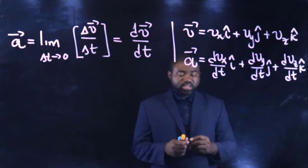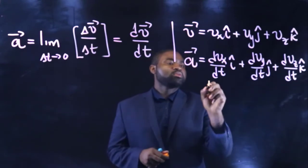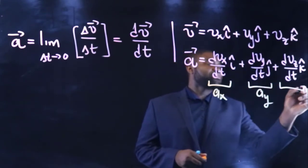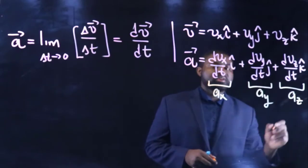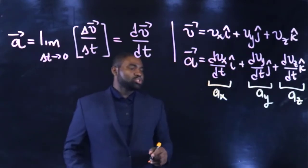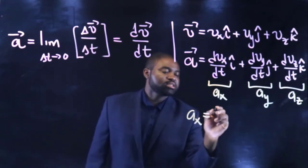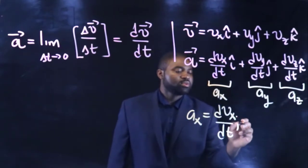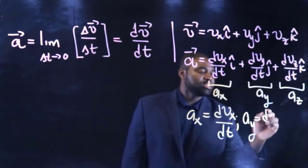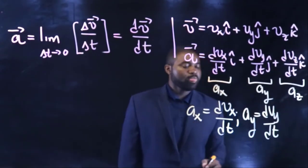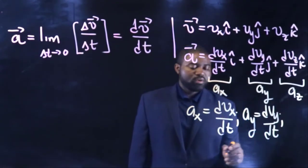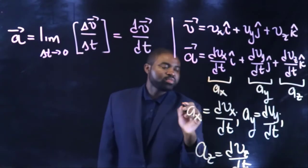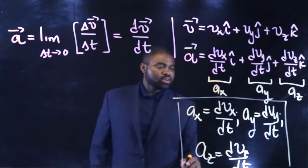Here, dvx/dt is ax, dvy/dt is ay, and dvz/dt is az. This would mean that ax is dvx/dt, ay is dvy/dt, and az is dvz/dt. This defines the x, y, and z components of the acceleration.